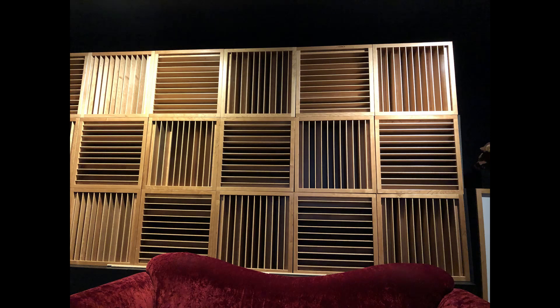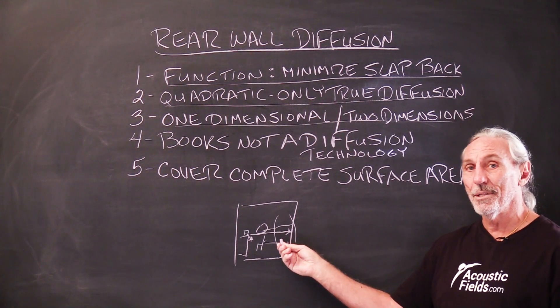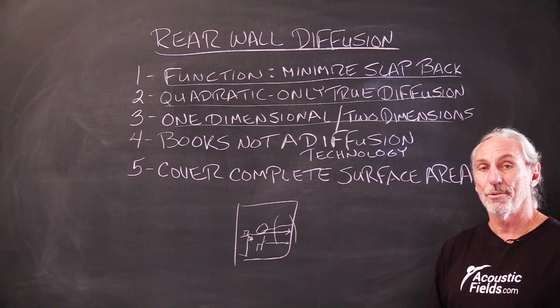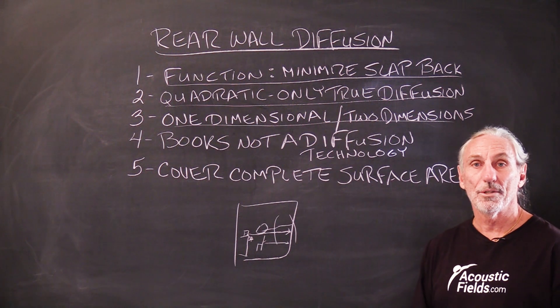But the bottom line here is we want to stay consistent. We can use one or two dimensional depending on the distance. We don't want to have things that we think will work. We have to have things that we know will work because if you're making an income in this room you want it to behave the same way all the time. So that's what we're looking at for this rear wall situation and diffusion.